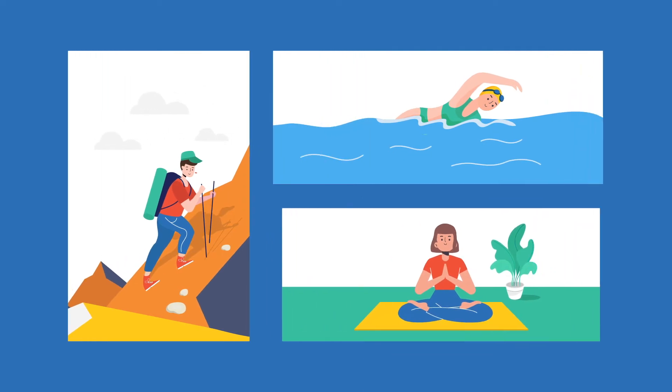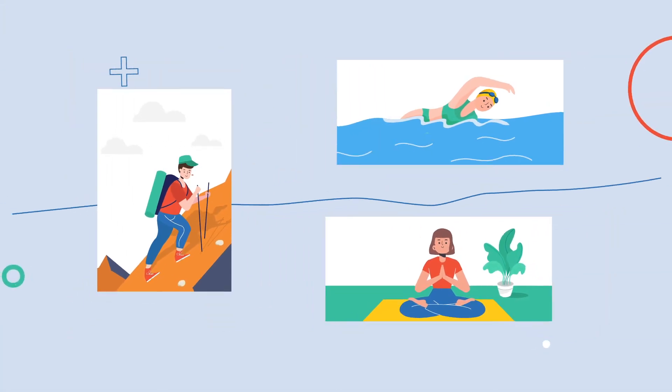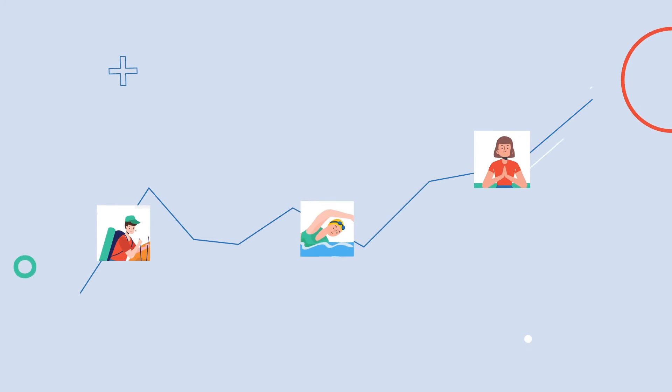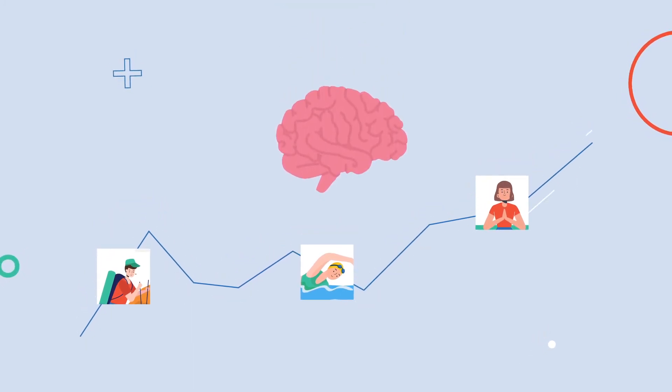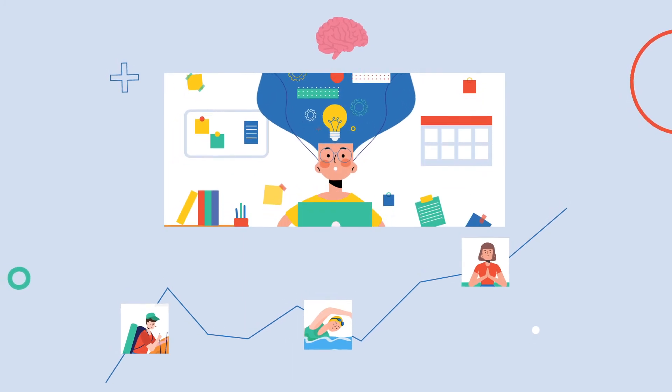A study by Netherlands researchers provides solid proof that regular exercise seems to be associated with improved divergent and convergent thinking, both of which are crucial to creativity.